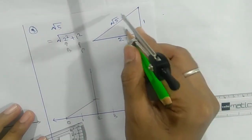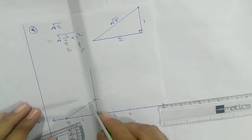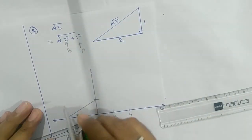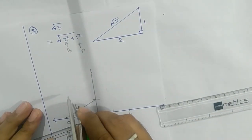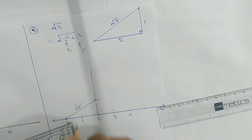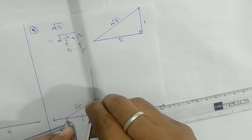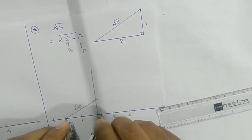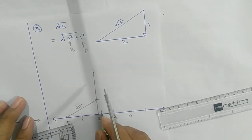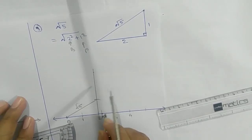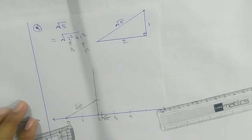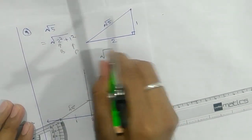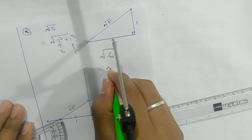You can see the perpendicular, the base, and the hypotenuse — the hypotenuse here is root 5. Take the length of this root 5, draw an arc on the number line, and whatever point you get on the number line — that point is your root 5.